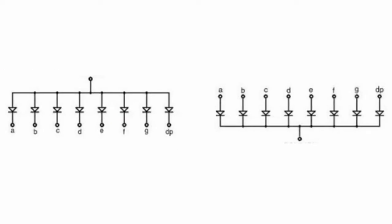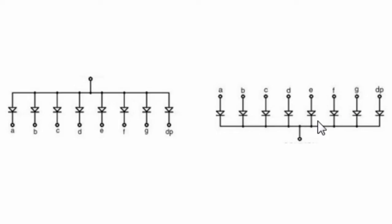The 7-segment displays are available in two configurations: common anode and common cathode. In common anode, all the internal LEDs are connected together and should be connected to the positive supply or to the common pin. In common cathode, all the cathodes are connected together and should be connected to ground or to the common pin.